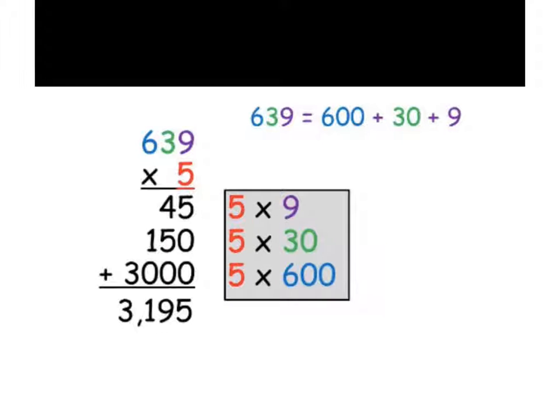All right. There's another way that we could multiply, and we call this partial products. So here what we have is 639 times 5, and what we end up doing is we end up separating each digit according to its place value and multiplying that times 5. So first we had 5 times 9, so that was 45 here. Then we did 3 times 5, but it's not really 3. It's actually 30 because it's in the tens place.